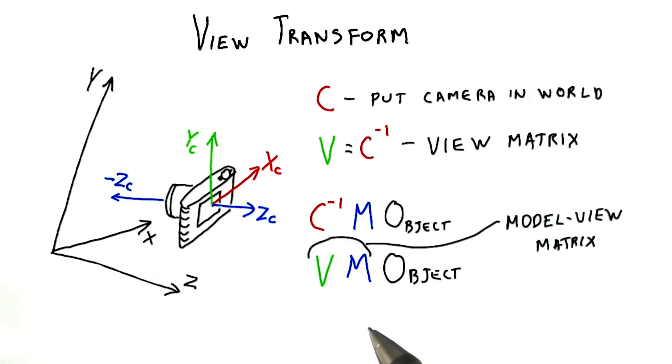If you deal with WebGL or OpenGL directly, you'll see these two matrices put together as a single matrix called the model view matrix. This matrix is applied to an object, immediately taking it from its own model space to view space.